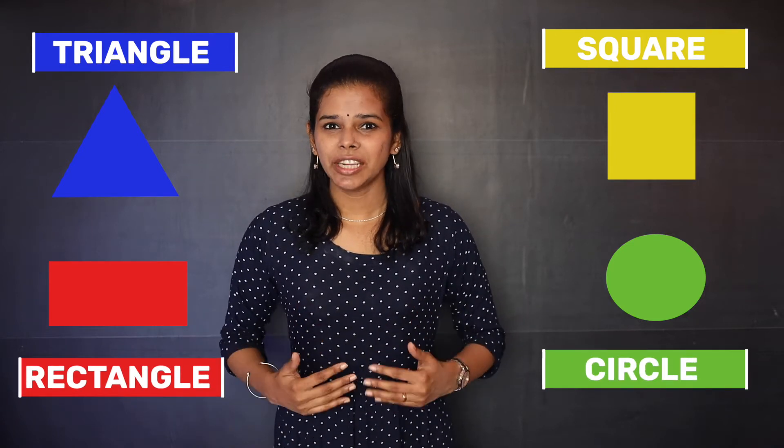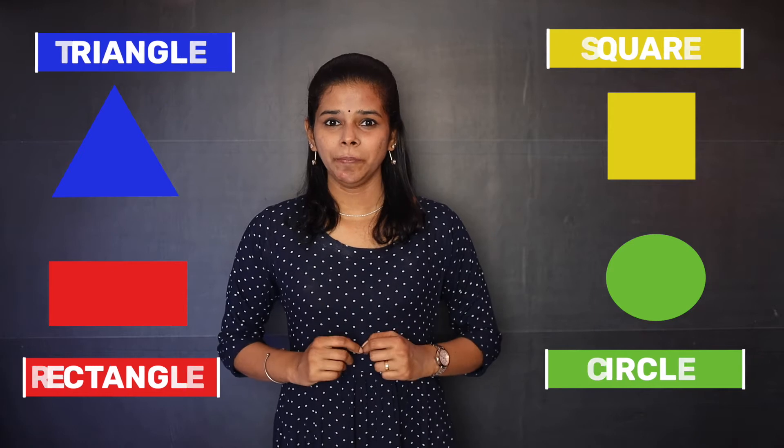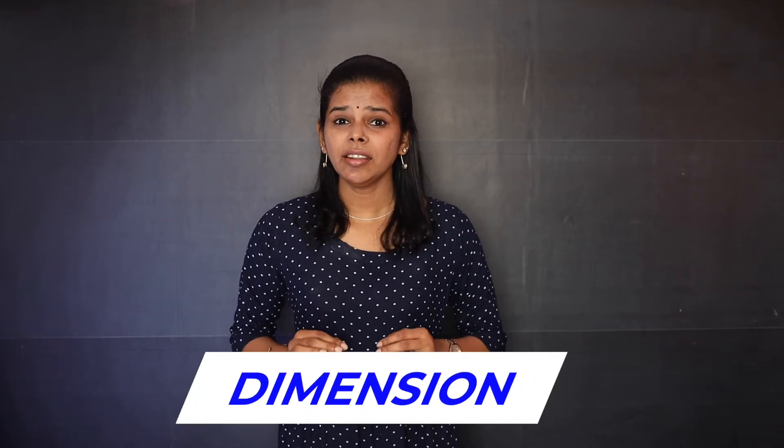Before we begin, let us recall the meaning of the term dimension. What do you mean by a dimension? It is a thing that we can measure. Look at this — it is a point or a dot. You would call it a small dot or a tiny dot, and you are not bothered to measure its dimension. A dot has no dimension. Now look at this: it is a line. Is there any dimension? You can see there is a length — you can measure the length.